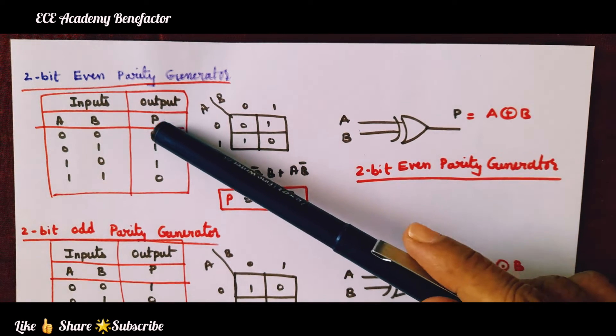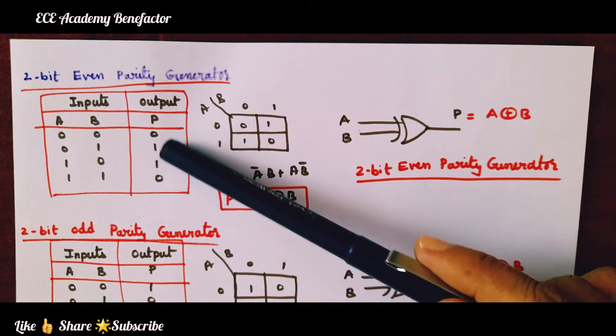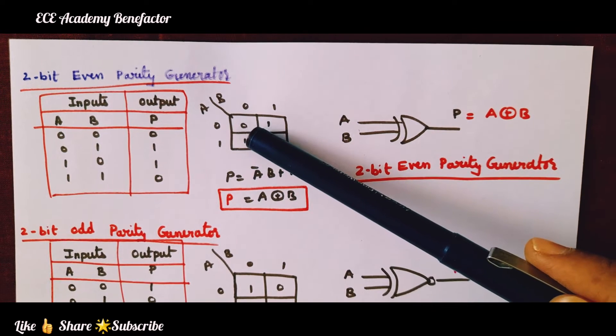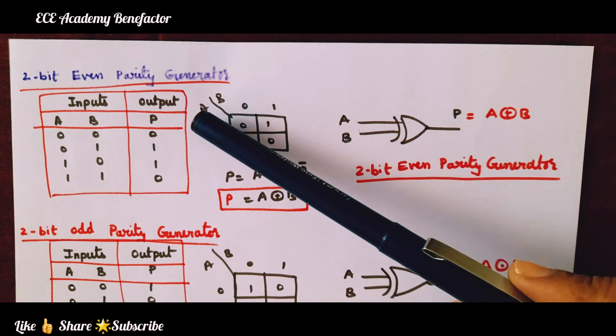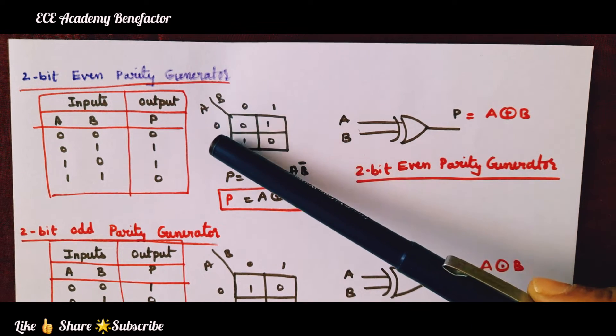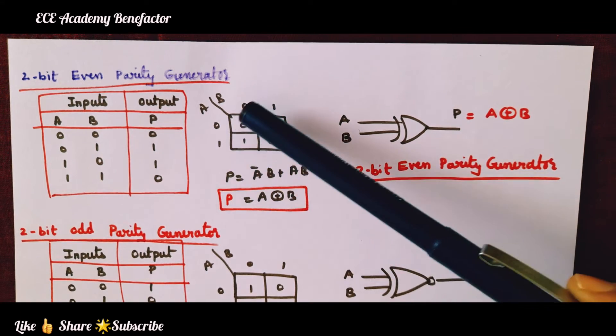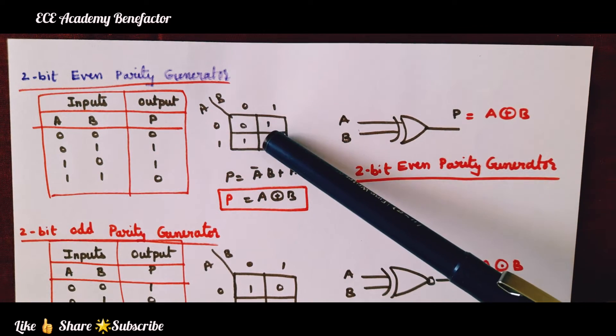It is very clear this parity column is an XOR gate. But we have simplified it using K-map. A, B: 0,1; 0,1. Now fill it: 0,1,1,0.